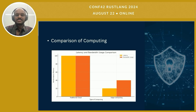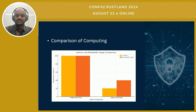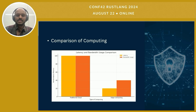This slide presents a comparison between traditional cloud computing and edge computing, specifically focusing on latency and bandwidth usage. As depicted in the chart, traditional cloud computing tends to have higher latency and bandwidth usage because data has to travel back and forth from central cloud servers, which can be located far from the data source. Edge computing significantly reduces both latency and bandwidth usage by processing data closer to where it is generated. This proximity allows for faster response and more efficient data handling, which is particularly critical for applications requiring real-time processing with limited network resources. These benefits make edge computing an increasingly attractive option for modern applications, especially in areas like smart devices and autonomous systems.